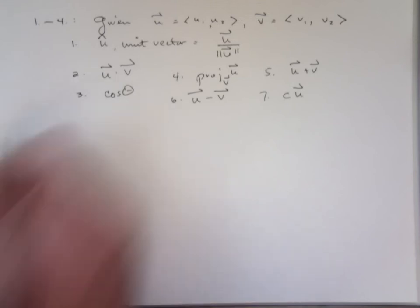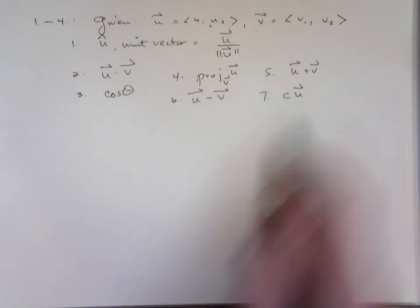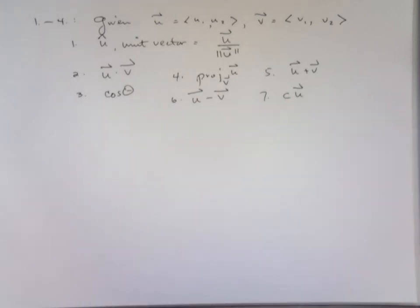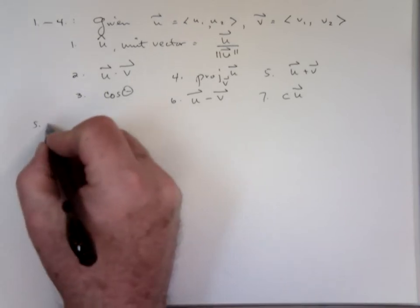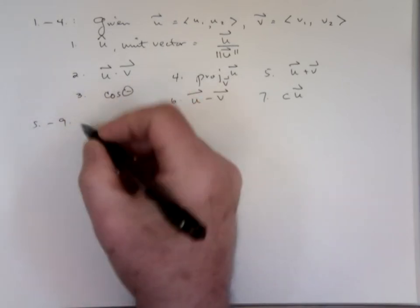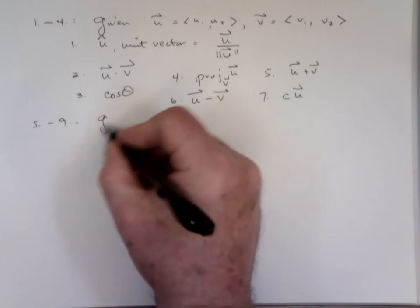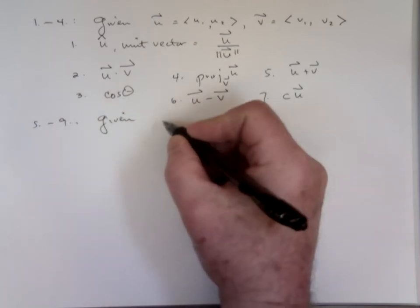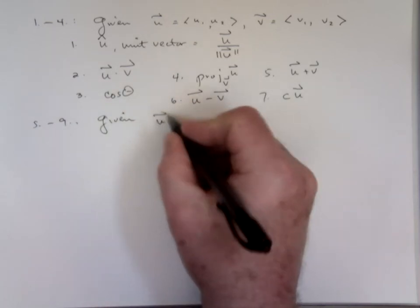So in the first section, you've got basic two space vector operations. Next section. What's that cu here? A constant times the vector. If I ask you for three times u, you multiply each component by three.